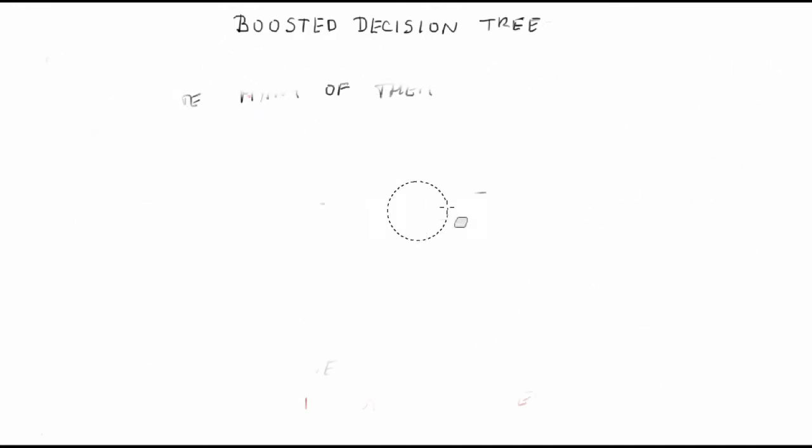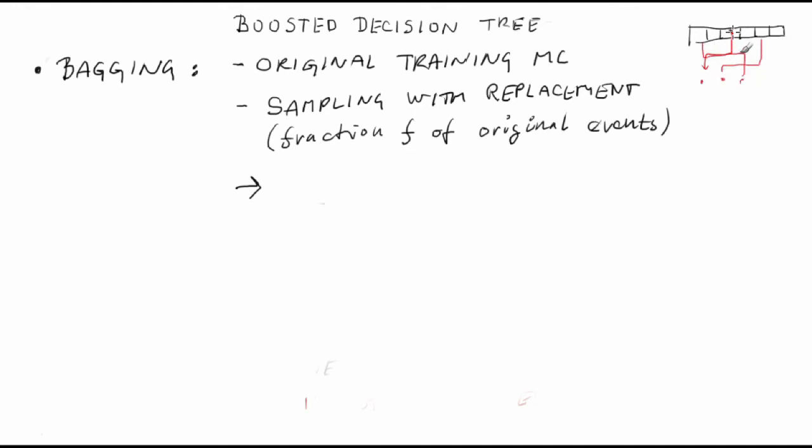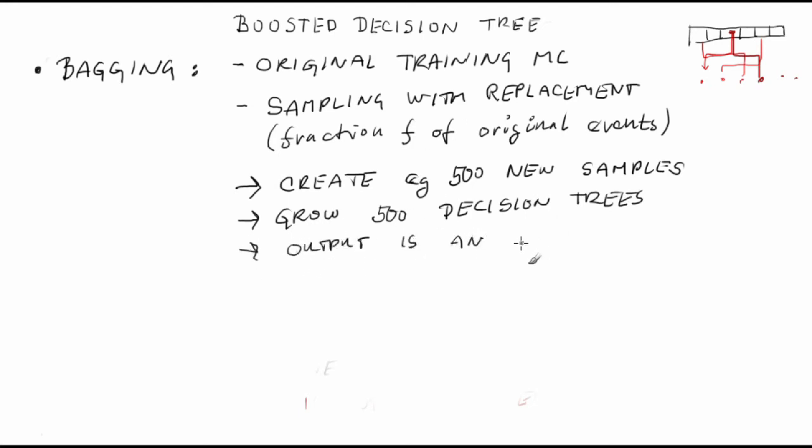Probably, the simplest way how to grow our forest is the so-called bagging. We take the original training sample and we prepare many training samples out of it. Each of them is a result of sampling a fraction f of events from the original sample with replacement. Sampling with replacement means that we take the original sample, we randomly choose an event and we copy the event to our new sample. Therefore, a concrete event might occur several times in the new sample. This way we prepare, say, 500 training samples. Each of them is used to grow one decision tree.